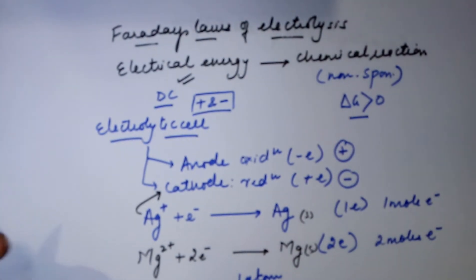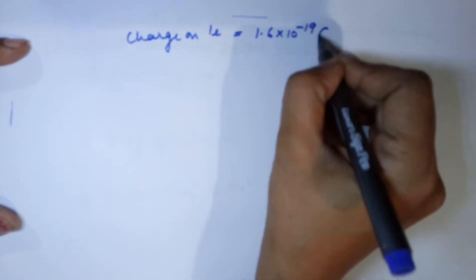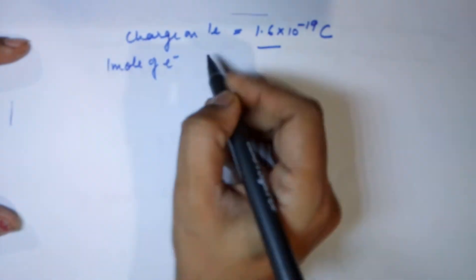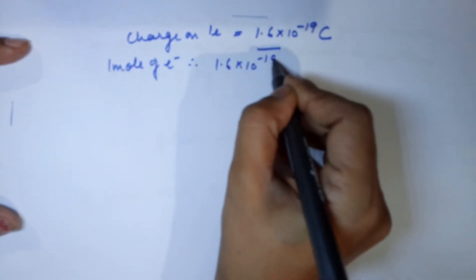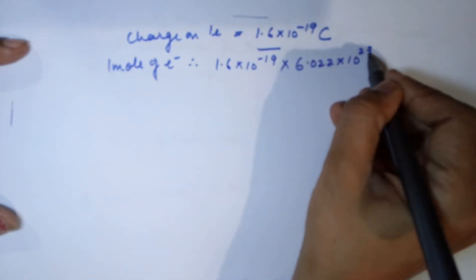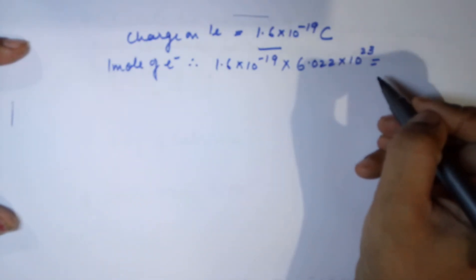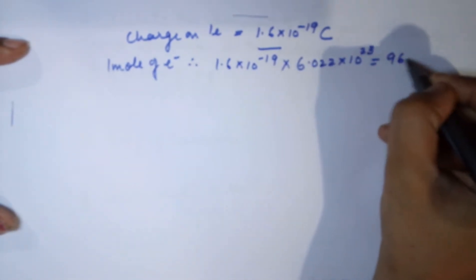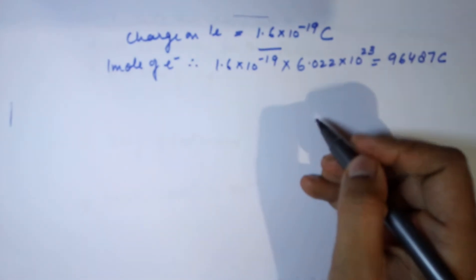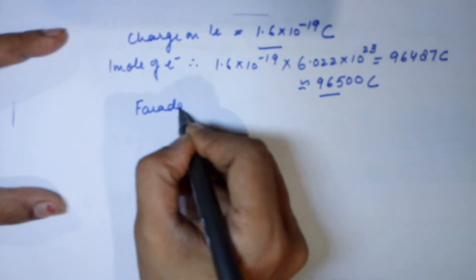Developing the topic further, from the moles of electrons, we know that the charge on one electron is equal to 1.6 × 10⁻¹⁹ coulombs. If I have one mole of electrons, therefore it means 1.6 × 10⁻¹⁹ multiplied by Avogadro's number — 6.02 × 10²³ electrons — gives the total charge for one mole of electrons. This value comes out to be 96,487 coulombs, approximated to 96,500 for all practical purposes, and this is called Faraday's constant.